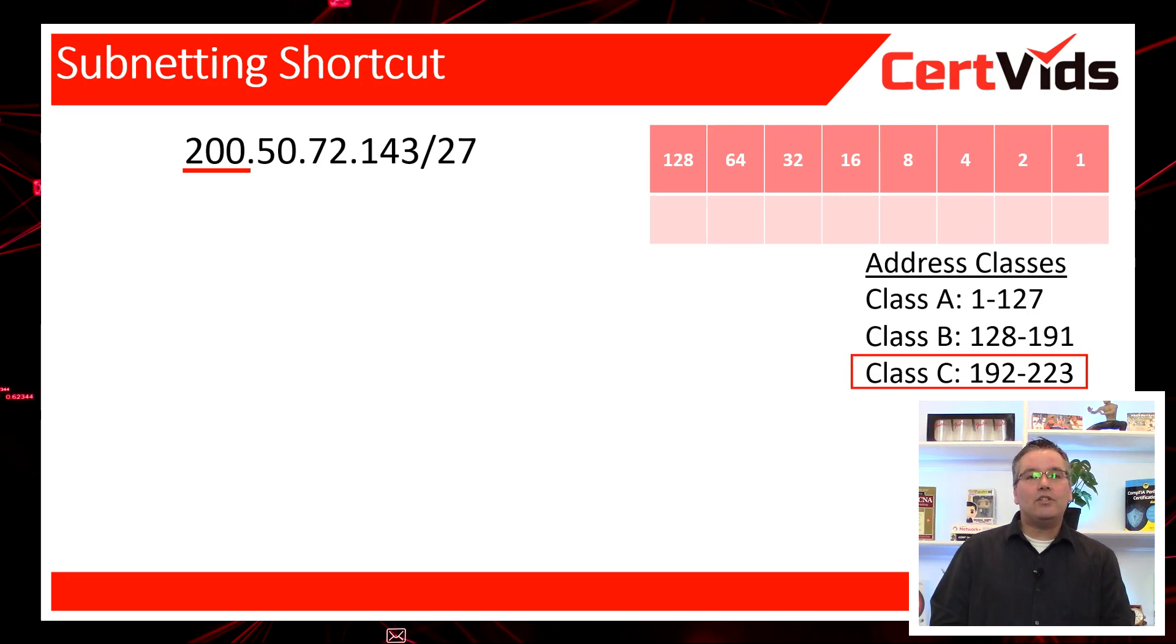Class C addresses range from 192 to 223. A class C address would have a subnet mask that is 255.255.255.0, which is 24 bits enabled in the subnet mask. In this example, we can see that there's 27 bits. So we know that this is a subnetted example. It's building off the defaults of the class C address.